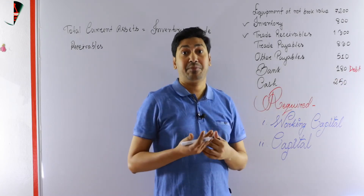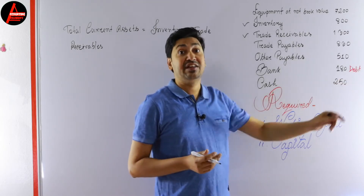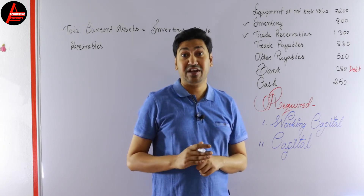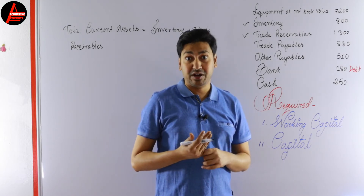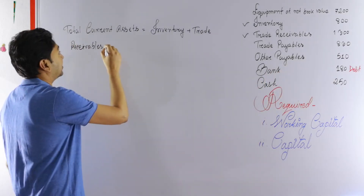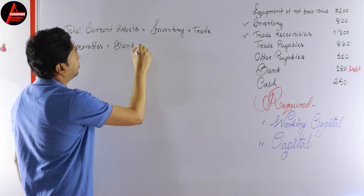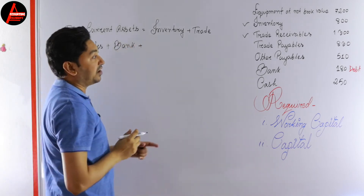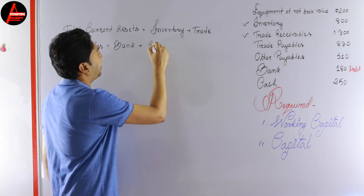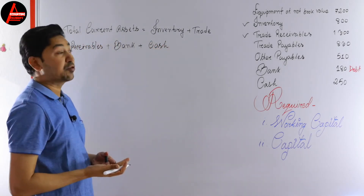A debit balance for bank means it is a bank balance and therefore a current asset. If it were a credit balance, we would treat it as a current liability, meaning it would be a bank overdraft. Since it is a debit balance, it is a current asset. So we include bank, and then cash, which is also a current asset.